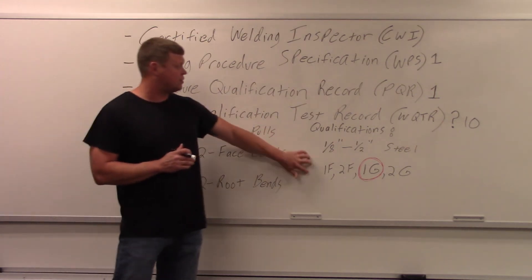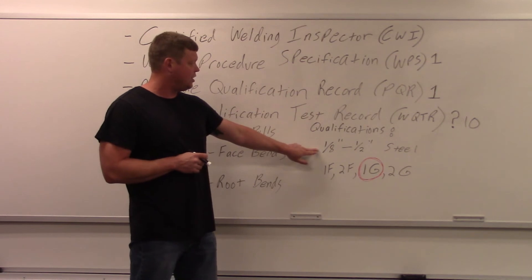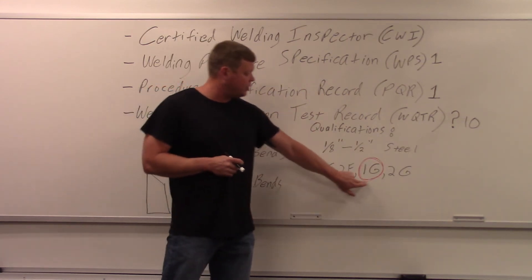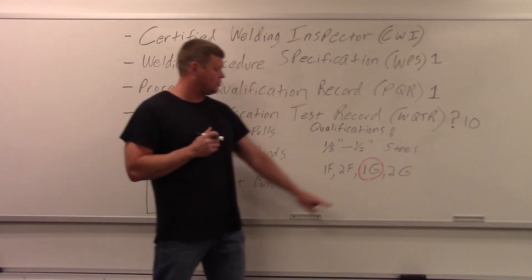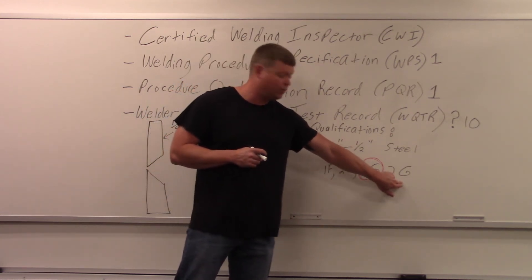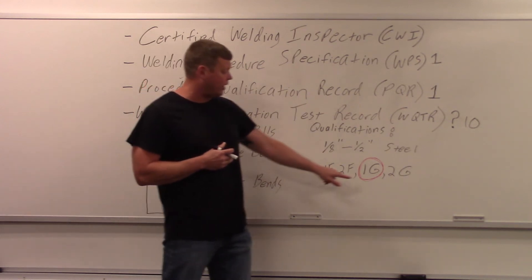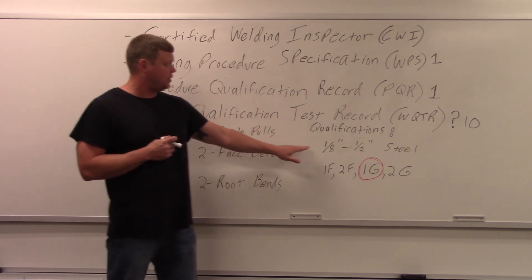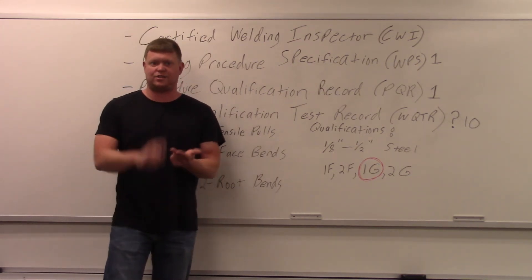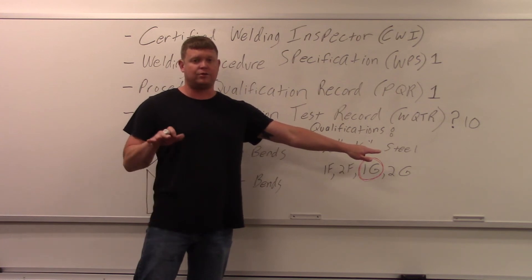At the end of the day, after all that work, your qualifications are: eighth inch to half inch thick steel in the structural application, positions 1F, 2F, 1G, and 2G. Certifying in 2G also gives you 1G even though we didn't specifically need it - which can help if something else in the same company requires 1G. Now if you switch to a different application that's not structural, not steel - say you're welding three quarter inch steel - you've got to get a whole new set of procedures. This can get complicated very quickly.